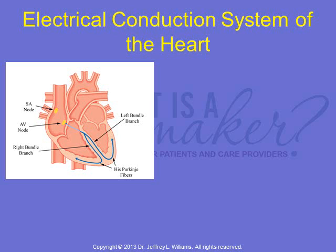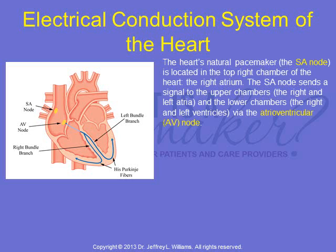The electrical conduction system of the heart is shown below. The heart's natural pacemaker, the sinoatrial node, is located in the top right chamber of the heart, called the right atrium. The SA node sends a signal to the upper chambers, called the right and left atria, and the lower chambers, called the right and left ventricles, via the atrioventricular node.